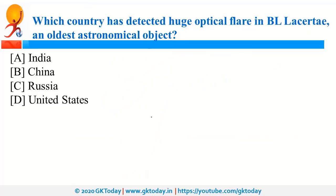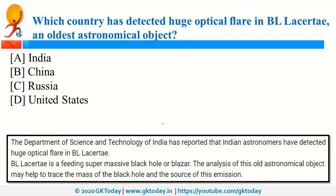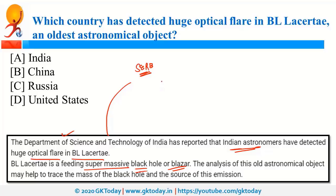Indian astronomers, as reported by the Department of Science and Technology (DST), detected a huge optical flare in BL Lacertae, a supermassive black hole or blazar, which is one of the oldest astronomical objects. DST was also in news because of SERB — Science and Engineering Research Board — which announced the SERB Women Excellence Award. SERB is under the Department of Science and Technology.